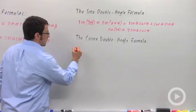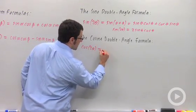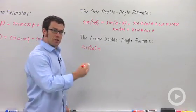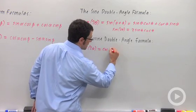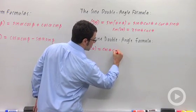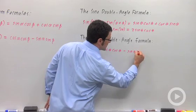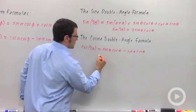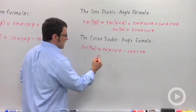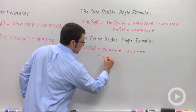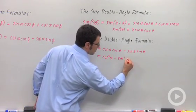Let's do the same thing for cosine. Cosine 2 theta. The cosine of a sum is cosine cosine minus sine sine. So we get cosine theta cosine theta minus sine theta sine theta. This becomes cosine squared theta minus sine squared theta. And that's our double angle identity for cosine.